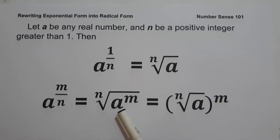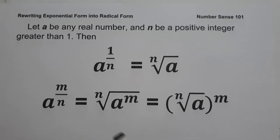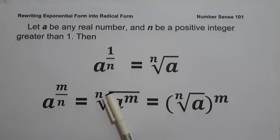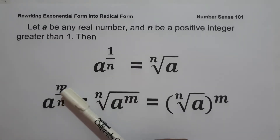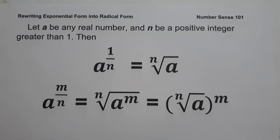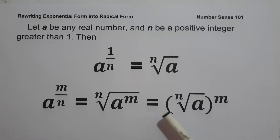The nth root of a raised to m is an example of a radical expression, where n is the index or order indicating the degree of the radical, a raised to m is the radicand — the number or expression inside the radical symbol — and m is the power or exponent of the radicand. This symbol is called the radical sign. So a raised to m over n is the principal nth root of a raised to m, where m over n is a rational number, and a is a positive real number, provided that the nth root of a raised to m is a real number. Those are the basic concepts needed to rewrite exponential form into radical form.